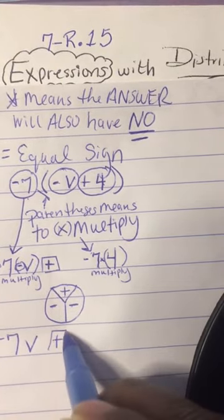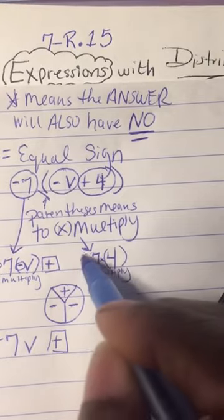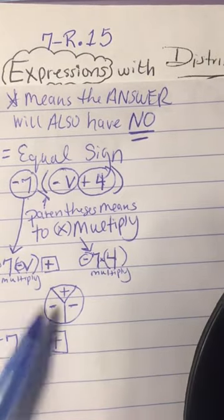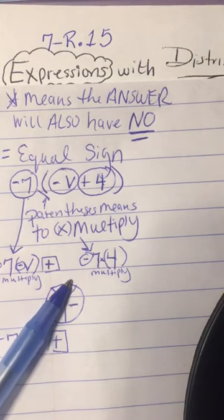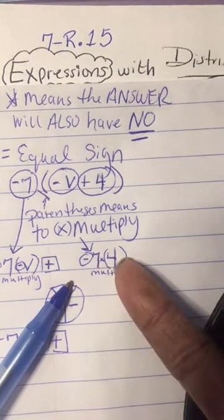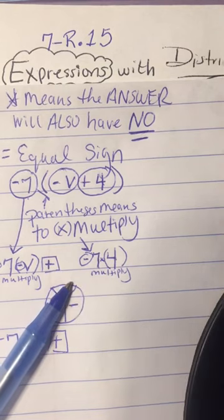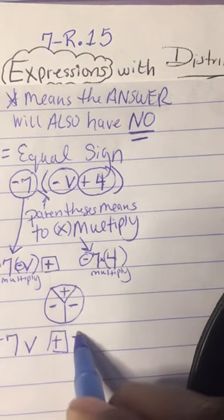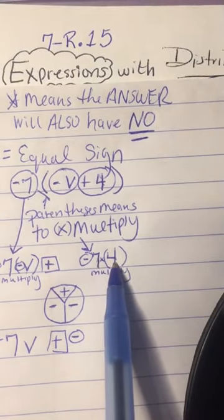So I'm going to have a positive 7V. I'm going to bring down the plus sign, and I have a negative times a positive. So I'm going to cover up the negative here and the positive here, and that yields a negative answer. So a negative times a positive leaves me with a negative answer. So this is going to be negative.